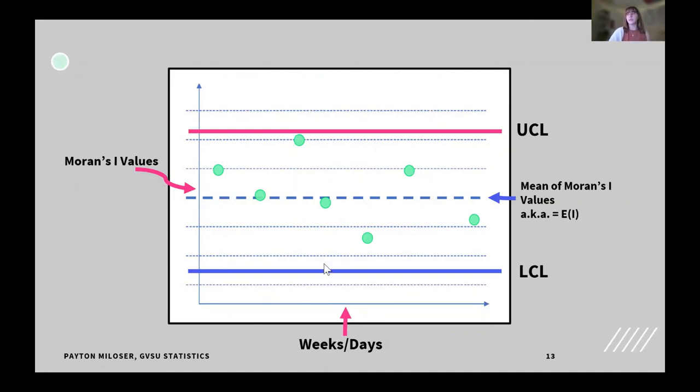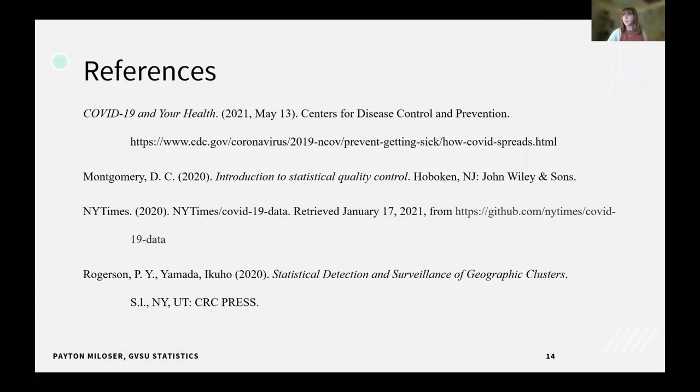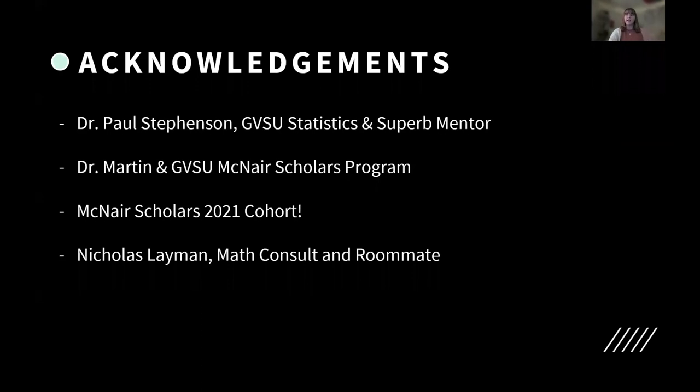For this, if we had a Moran's i value out of bounds, this would signal to us on a specific day that we would potentially be having an outbreak and we would want to maybe make a map and look into that a little further. Here are my references for my talk today and here are my acknowledgments. I would like to thank you as well for watching and listening to my presentation.